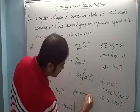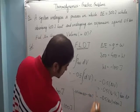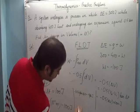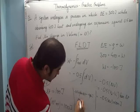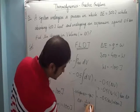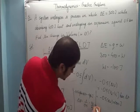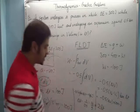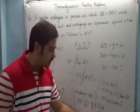Hundred cancels with hundred. So delta V becomes 1 upon 0.5, that is 10 by 5, that is finally 2 liters. So the answer came out to be 2 liters.